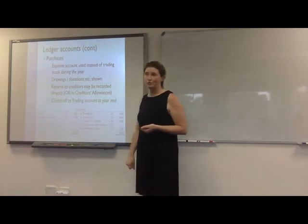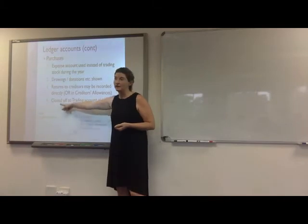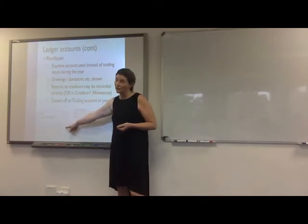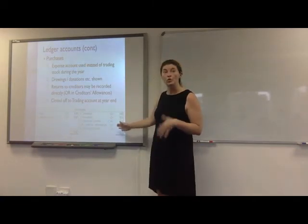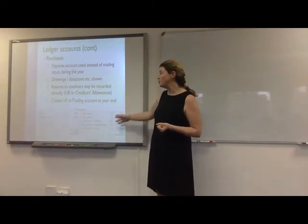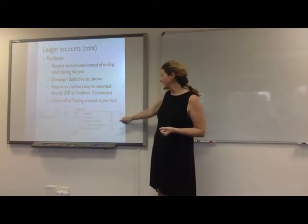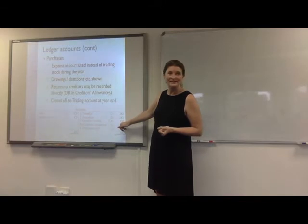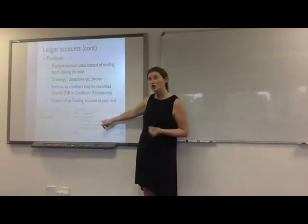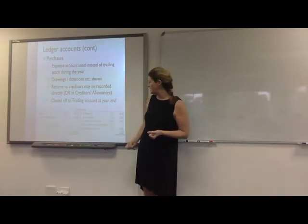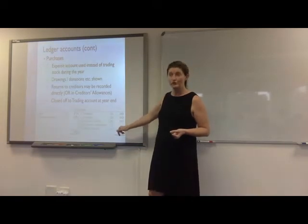So that is what your purchases account will look like. You can see you've got your entries on the debit side as you spend money from cash or credit buying your inventory, and the credit side is going to be where inventory was not an expense — so you're reducing your expense. The owner took goods, you donated goods, you sent it back to creditors. Either during the year you just use creditors control, or if you've got an allowances account, you would close that off at the end and close the entire purchases account off to the trading account.